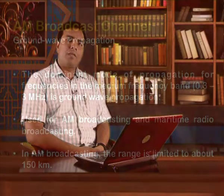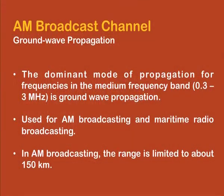Now we are going to talk about the AM broadcast channel, starting with ground wave propagation. Ground wave propagation is dominated by frequencies in the medium frequency range, extending from 300 kHz to 3 MHz, and is mainly used for AM broadcasting and maritime radio broadcasting. In the case of AM broadcasting, the range is limited to around 150 kilometers.